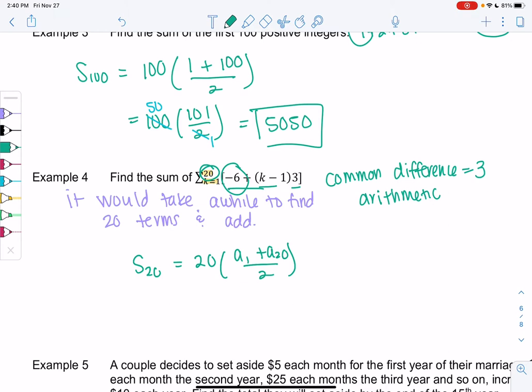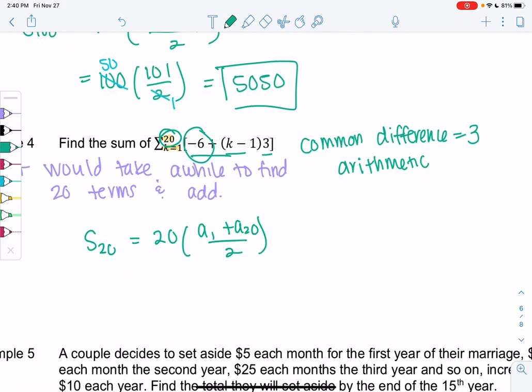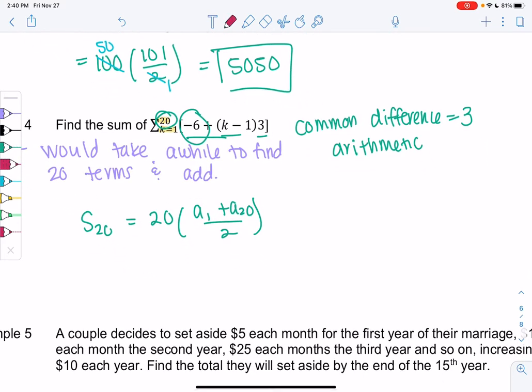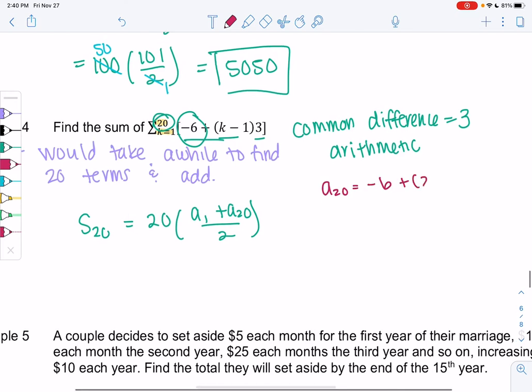So we already know the first term is negative 6. We do have to plug in 20 to find the 20th term, but we don't have to find all 20 terms. We only need the 20th term. So this is faster. So a20 will be negative 6 plus 20 minus 1 times 3.